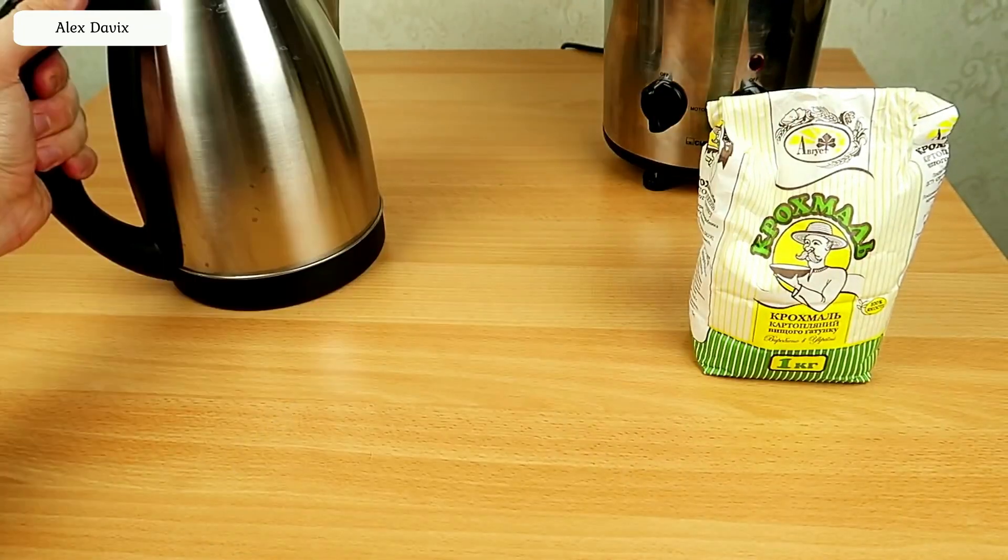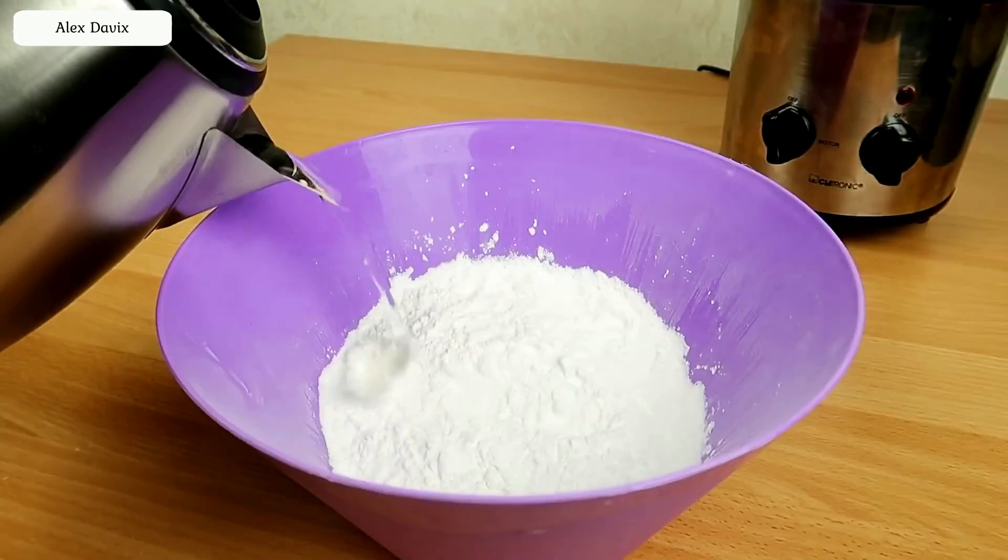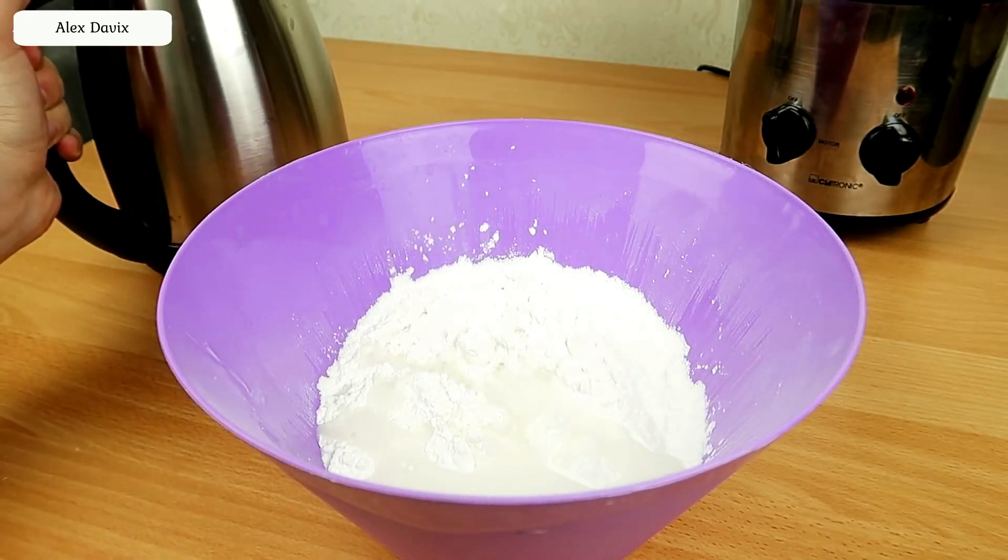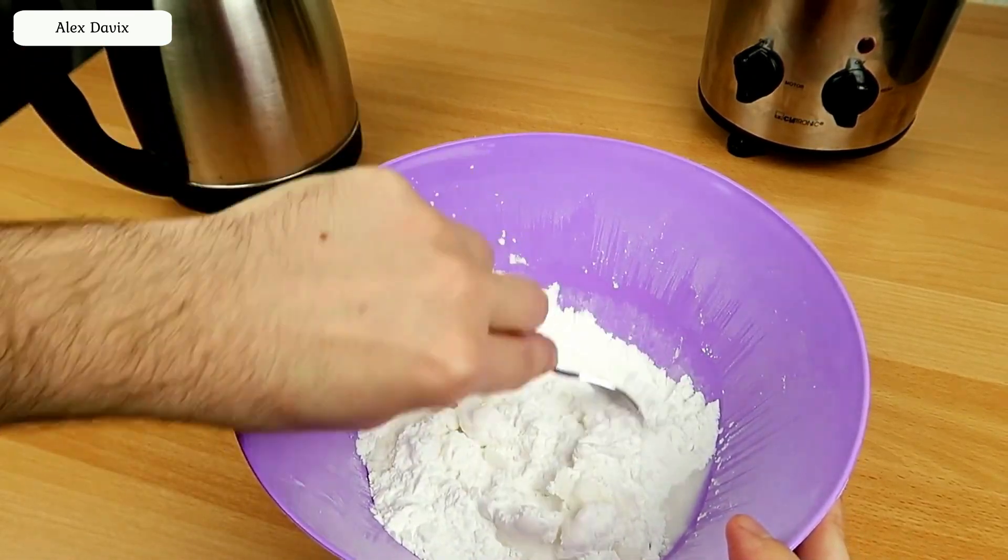We will need potato starch, water, and a bowl. Pour the starch into the bowl, I sprayed a little, and add water. The main thing is not to overdo it with water, otherwise this kind of liquid will not work. Water needs to be added little by little until you get the right consistency.